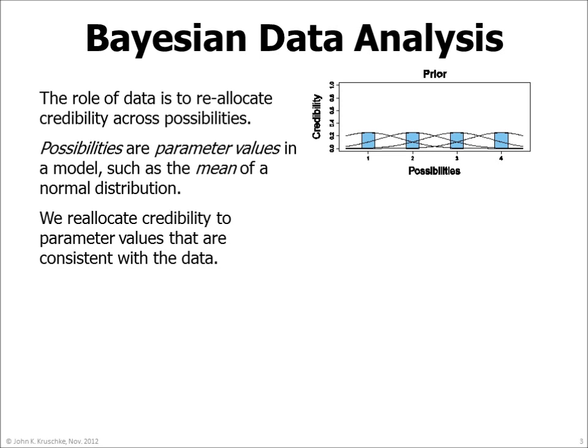There are normal distributions superimposed on the four bars to suggest the data distributions corresponding to each mean. In this example, we suppose that the four values of the mean are equally credible a priori, and therefore the bars have equal heights.